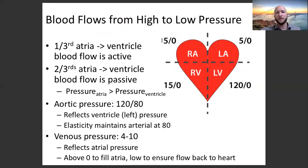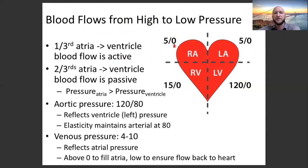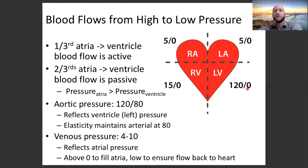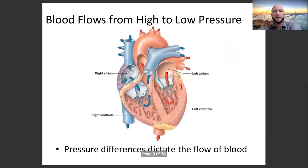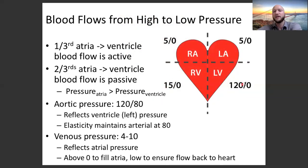The numbers on this graph show the pressure ranges of the different heart chambers. The right atria varies from 0 to 5 mmHg. The right ventricle ranges between 0 and 15 mmHg. The left atria: 0 and 5. The left ventricle: between 0 and 120 mmHg. This is why the left ventricle has more muscle and is thicker than the right ventricle — the right ventricle needs to reach about 15 mmHg, while the left ventricle needs to reach 120 mmHg, so it requires more muscle.